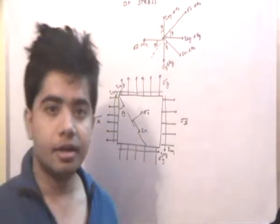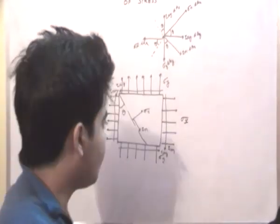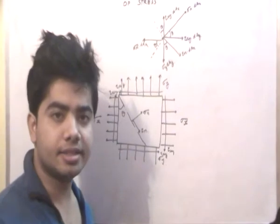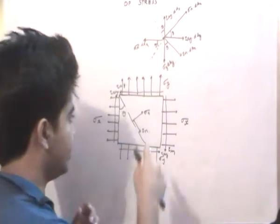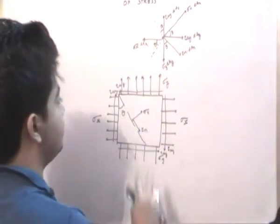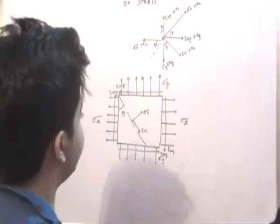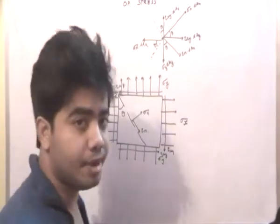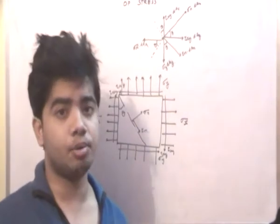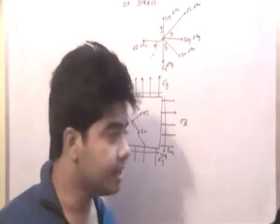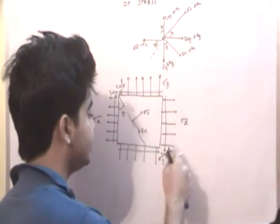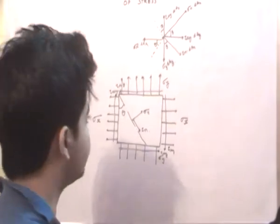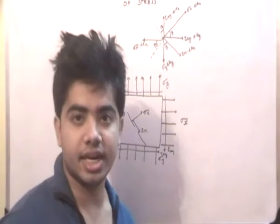Hey friends, good morning. In this lecture, what we will try to basically understand is this: a body subjected to a plane state of stress, which is mainly defined by three stress components — sigma x, sigma y, and tau xy. This we have seen in the previous lecture.